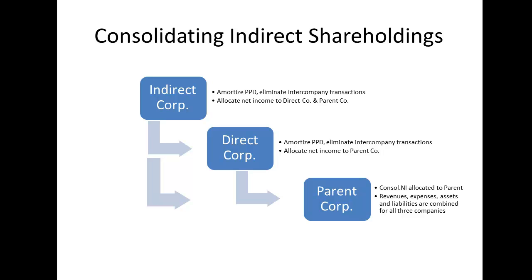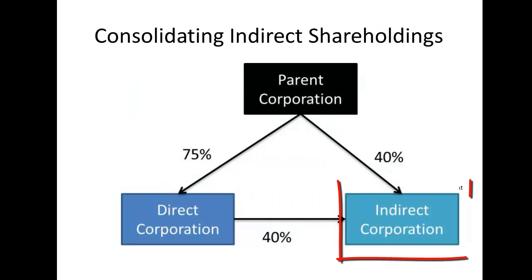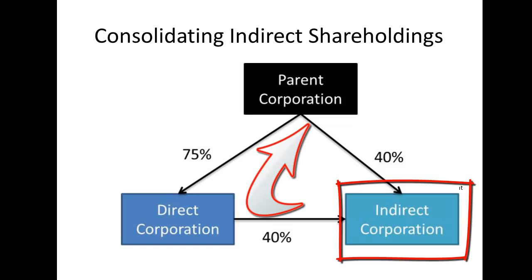As well as those amortizations of the purchase price differentials. However, because there are both direct and indirect earnings for parent, you need to go about the calculation of consolidated net earnings and the parent's allocation of those earnings sequentially, as depicted in this diagram. So directionally, we're going to do all of the same things we've already talked about. However, practically speaking, we're going to start at the bottom of the organizational chart — that is, with indirect corporation — and work our way back up to the parent corporation.